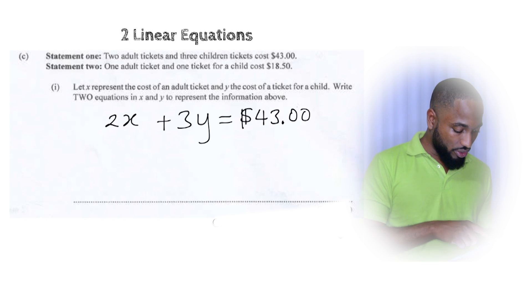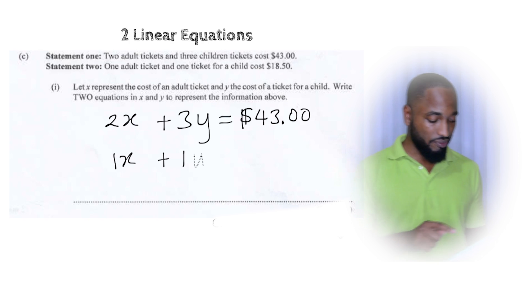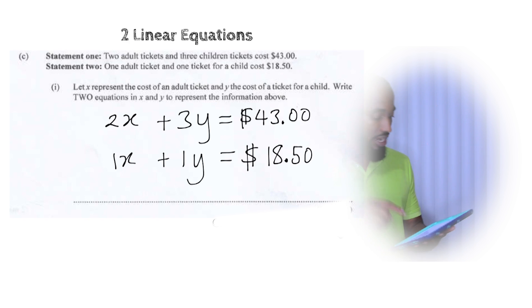Two X plus three Y. Now you understand, they kind of give you a little help here. They say X represents the cost of an adult ticket. So two adult tickets, two X plus three children tickets equal 43. So basic stuff. Do the same thing with the next one. One adult ticket, one child ticket cost 18.50. You could, if you want, you can leave out the ones since one X is the same as X. Label them equations. Equation one, equation two. Collect your two marks.